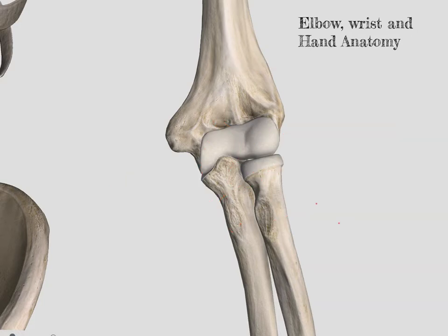Beginning to look at the bony prominences, starting on the humerus, we have an epicondyle on each side. Our radius is always on the lateral side, so here we have our lateral epicondyle. And then on the ulnar side, we have our medial epicondyle.